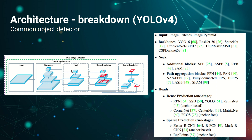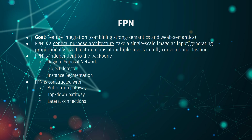FPN is independent of the backbone, meaning you can change the backbone without affecting FPN's applicability. FPN is also independent of the downstream task — you can use it for region proposal networks, object detection, instance segmentation, and more. This makes FPN a general-purpose architecture for feature integration.